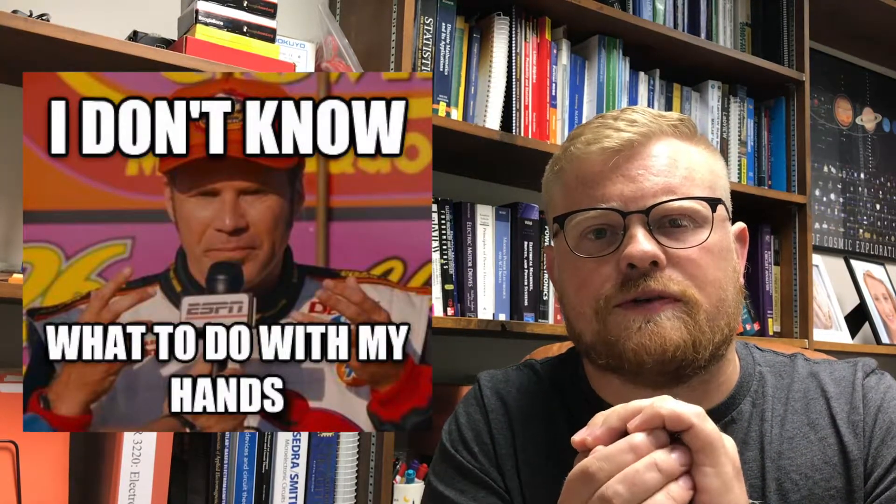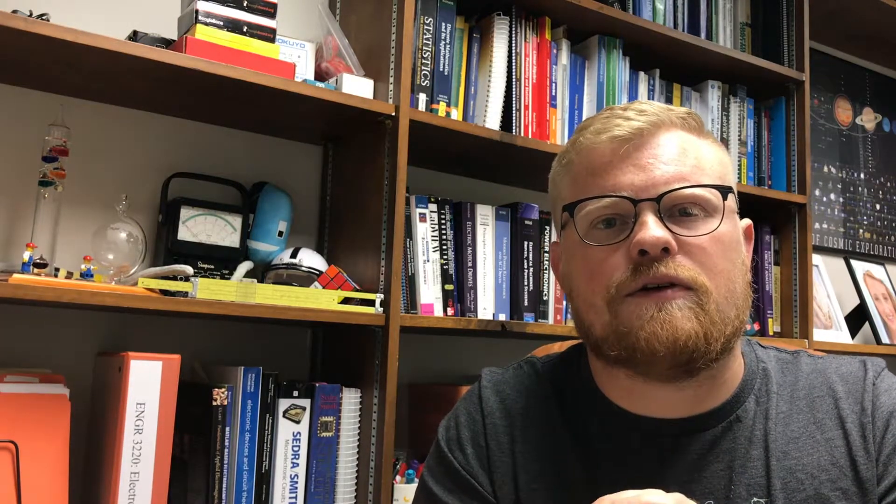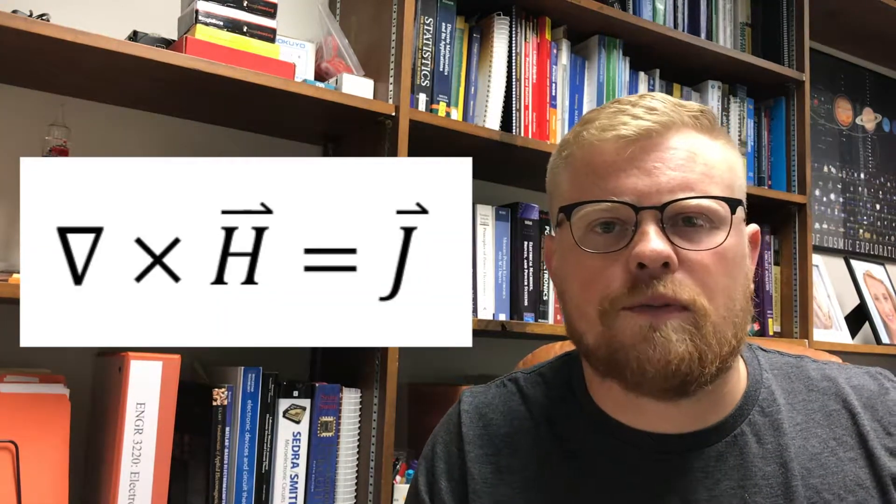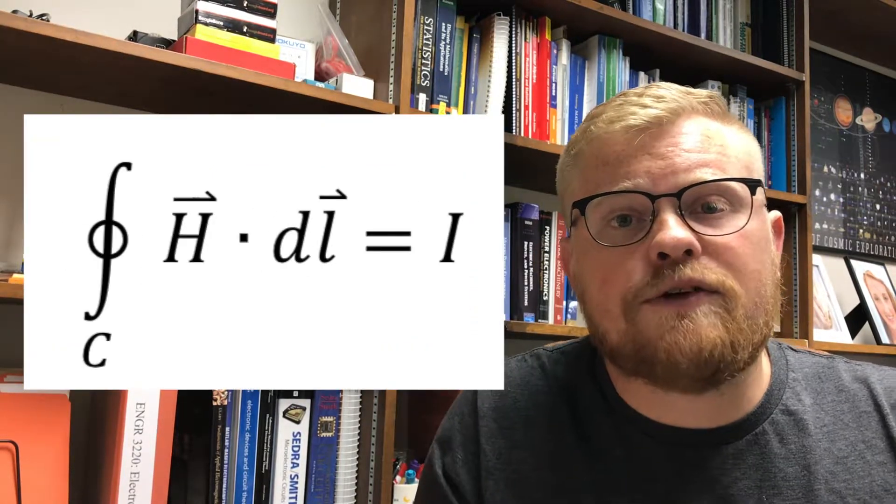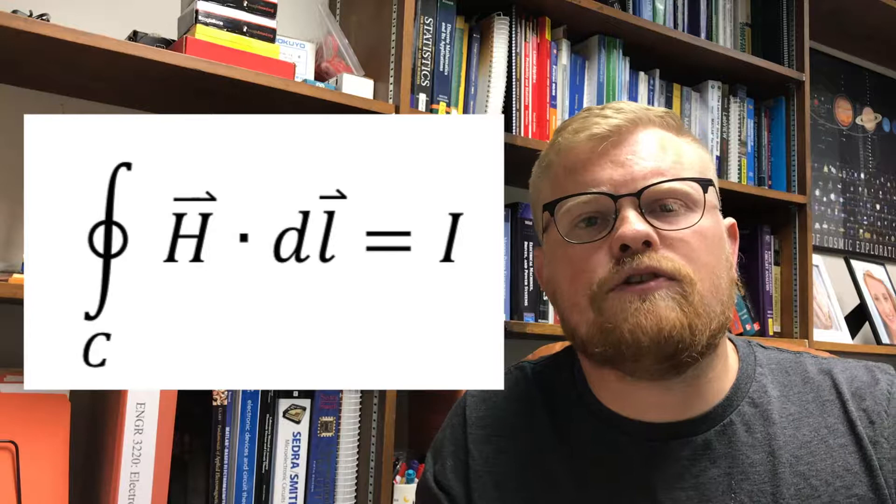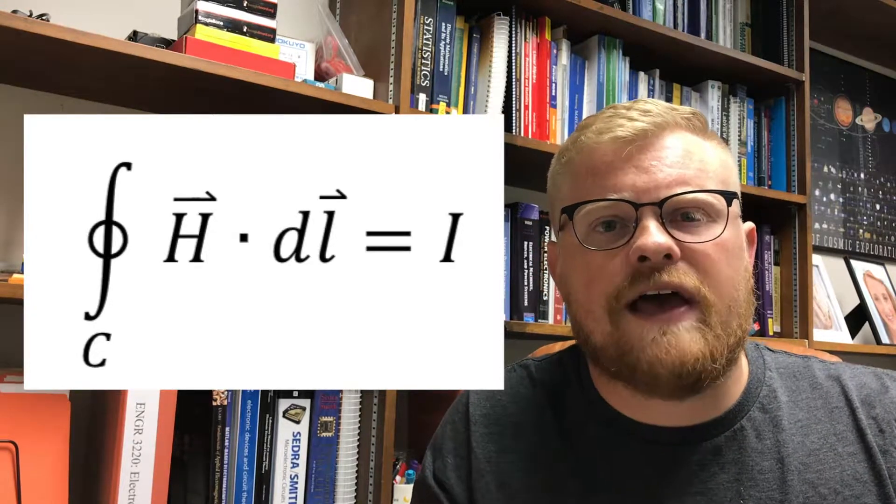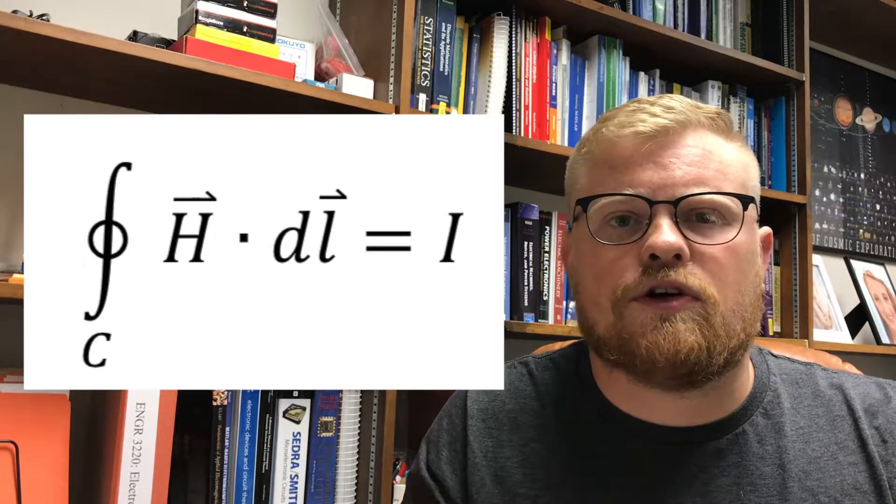This is a similar concept to Gauss's law, in which we had to construct a surface to enclose a charge distribution, and we used that to find the electric field. Ampere's law, in differential form, tells us that the curl of H is equal to the current density J, and in integral form, it tells us that the integral around a closed contour of H·dl is equal to the current I.